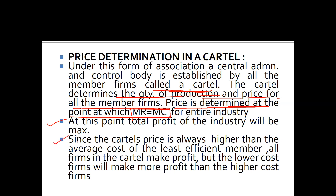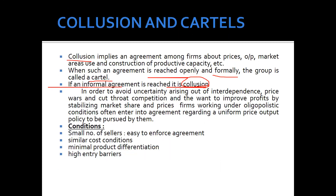Since the cartel's price is always higher than the average cost of the least efficient member, all firms in the cartel make profits. However, lower-cost firms will make more profit than higher-cost firms. The centralized governing body sets a uniform price, and all firms follow that price. Firms with low-cost production get higher margins, while those operating at higher costs get lower margins, since the price is the same for every firm in the cartel.